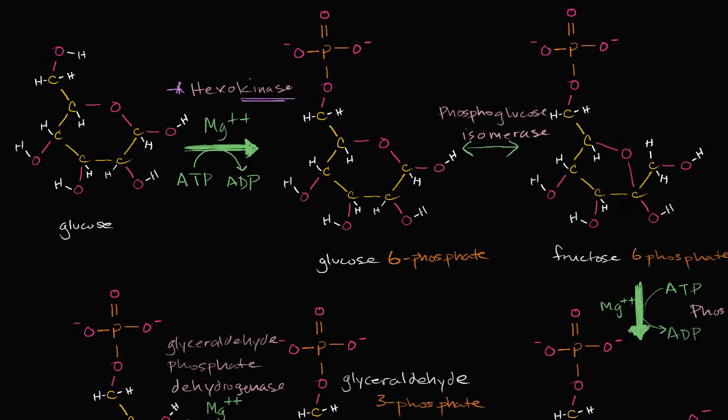And we've talked about that in other videos. How cofactors can help an enzyme lower the activation energy. And to do the phosphorylation, we use an ATP. So this is minus one, minus one ATP. So we are in the investment phase. We are in the investment phase right over here.